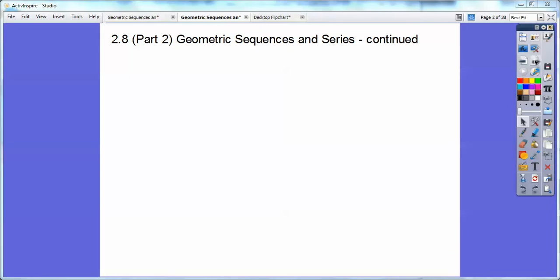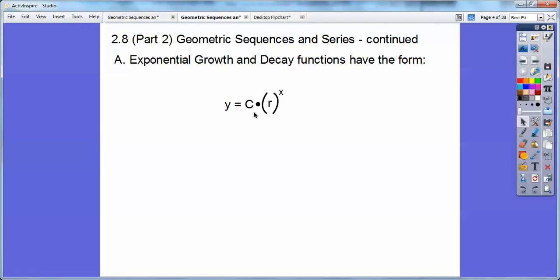So this is where we get our formulas, how to develop our formulas. Exponential growth and decay functions have the form of this: Y equals C times R to the X.